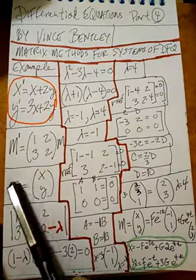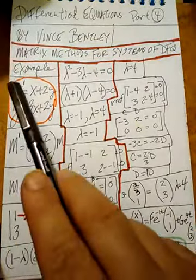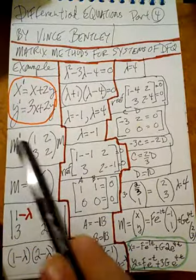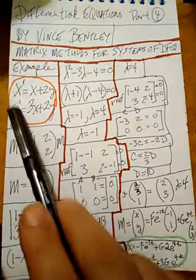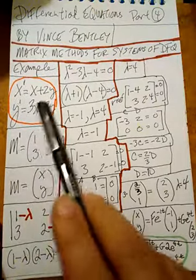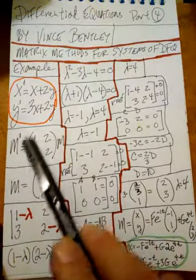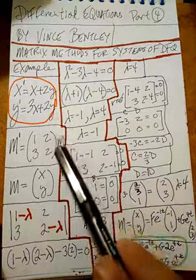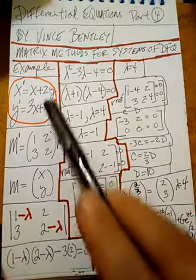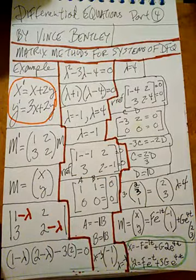So M will equal x, y. We'll transform the derivatives: if M is x, y then M prime is x prime, y prime. These two are M prime. We'll transform that into a matrix, and then if we put M right here, this matrix equation will equal this system of differential equations.